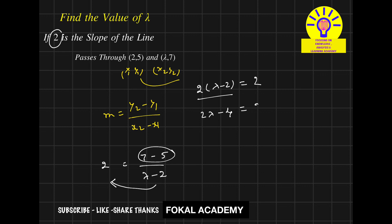Bring 4 to this side, then it becomes 2 lambda equals 2 plus 4. So lambda equals 6 over 2, which is 3. Lambda equals 3—this is the required value for the given problem and this is the process of simplification.